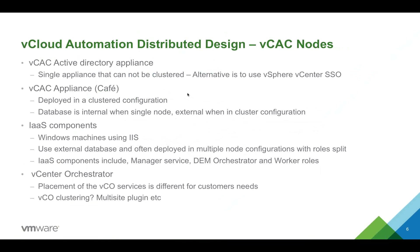To summarize: the identity appliance is a single point of failure, it can't be clustered, and alternatively vSphere SSO can be used. The VCAC cafe appliance can be clustered with an external database. IIS components are Windows machines using IIS with an external database, often in multiple-node configuration, including the manager DEM and orchestrator DEM. We've also got the multi-site plugin for VCO — in a distributed geo configuration, when you publish a workflow to one node it synchronizes the SQL database and workflow library with all other nodes around the world, and does it very quickly.